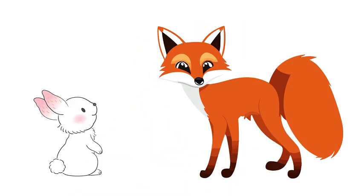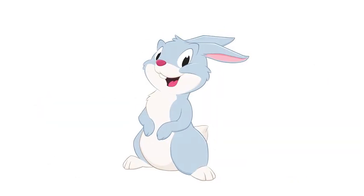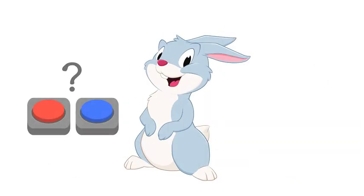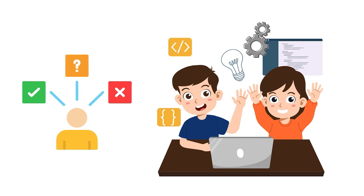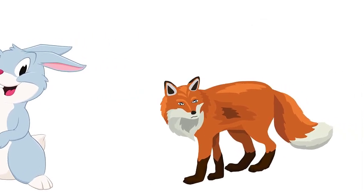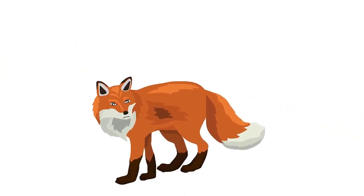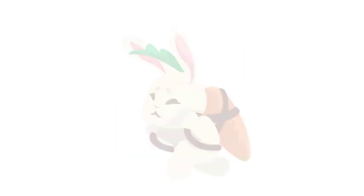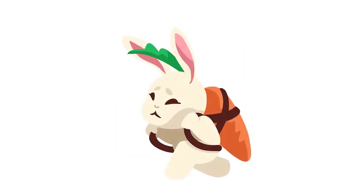What if Bobby meets a fox on the way? Bobby needs to decide what to do. You can tell the computer to make a decision for Bobby. If Bobby sees a fox, he will run away. If not, he'll keep moving forward. Pretty smart, right?